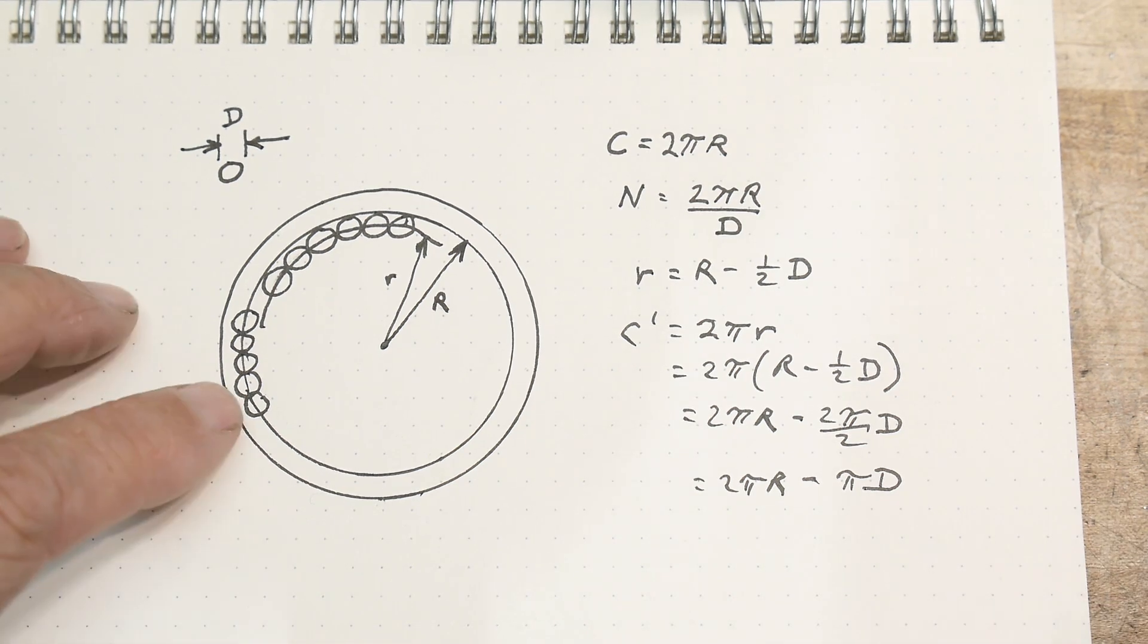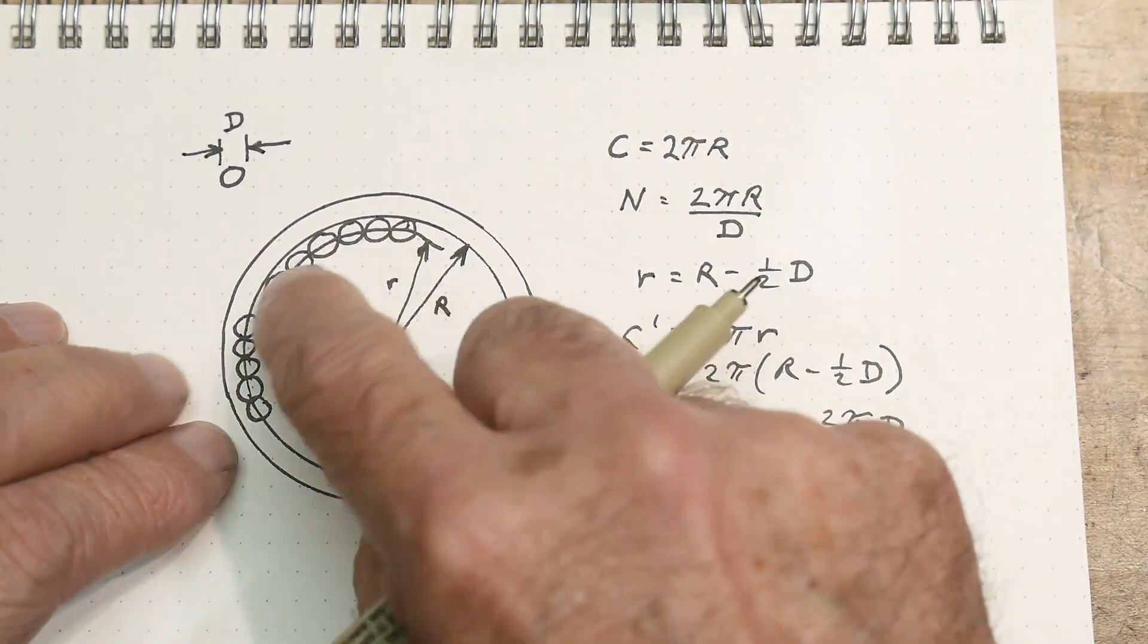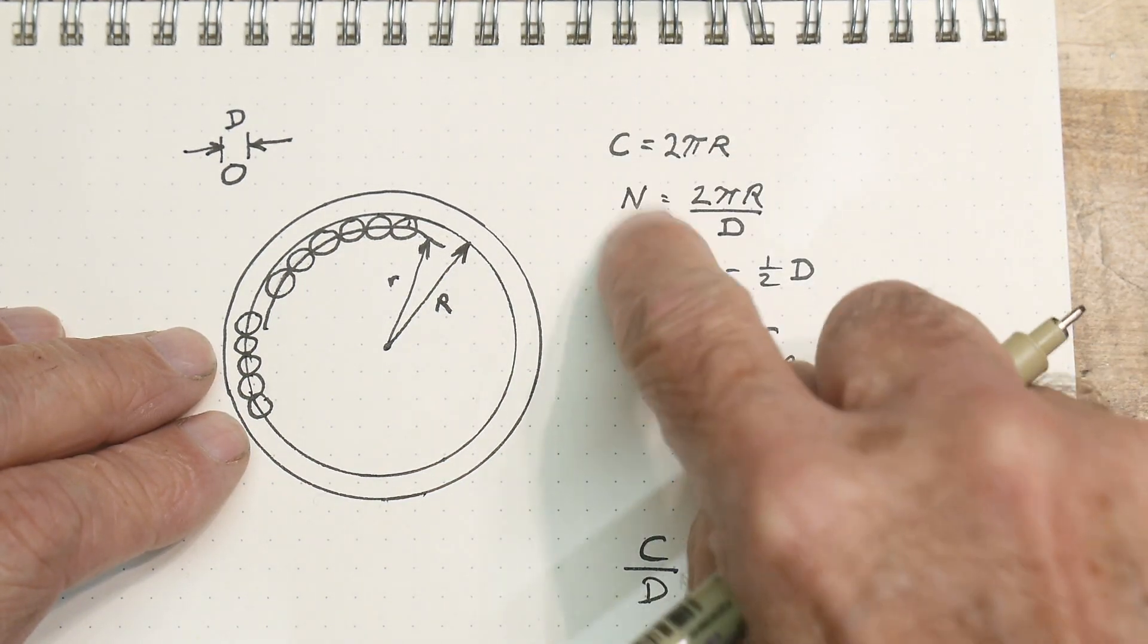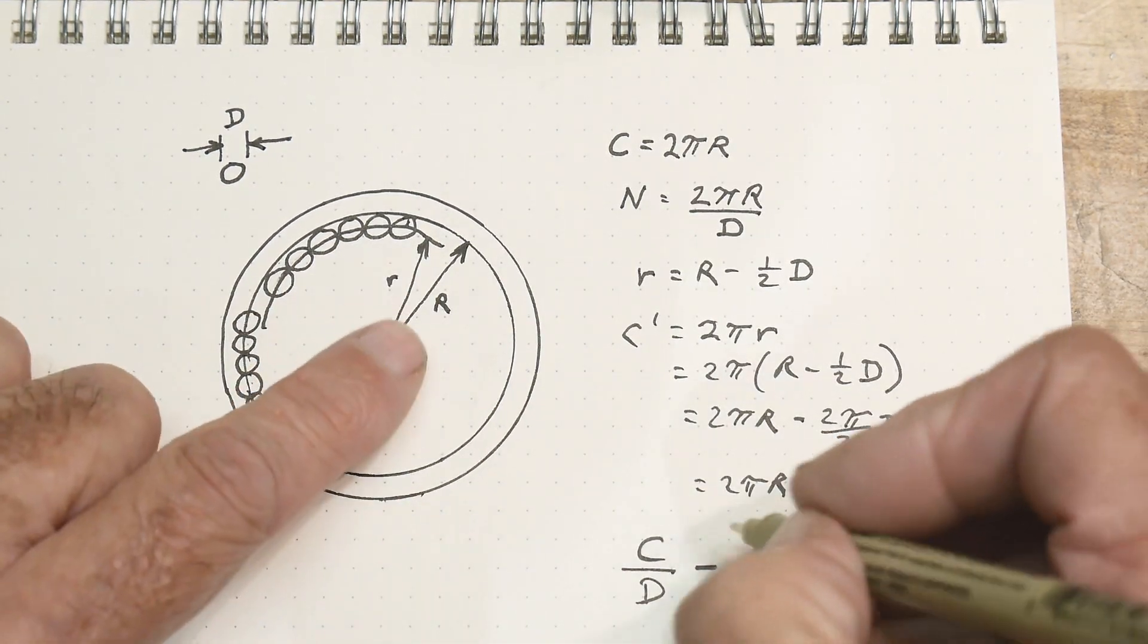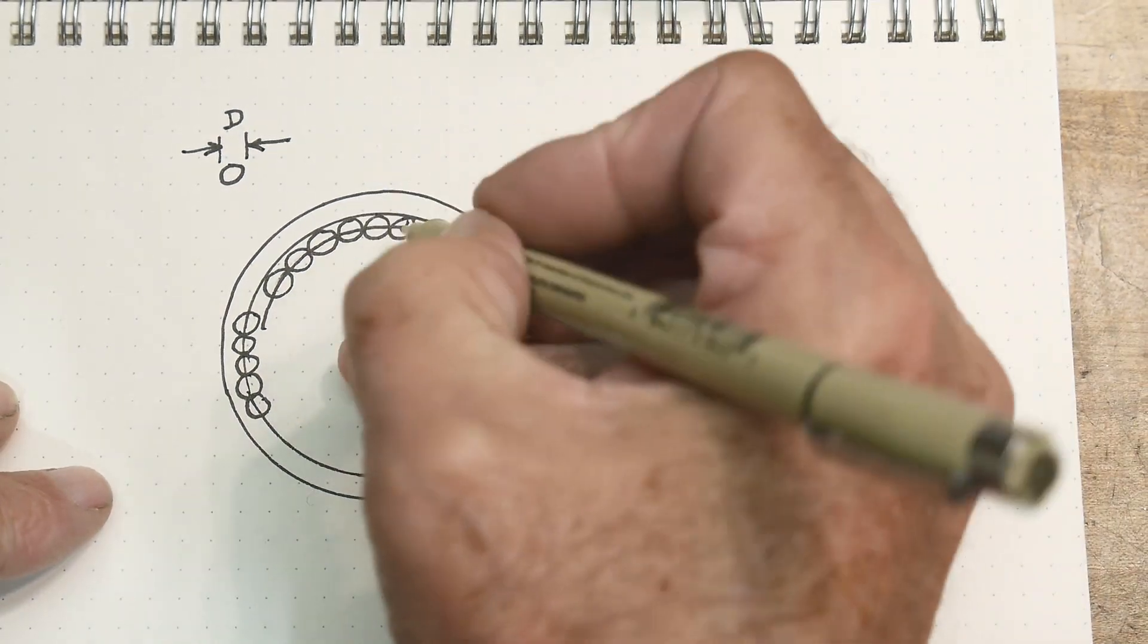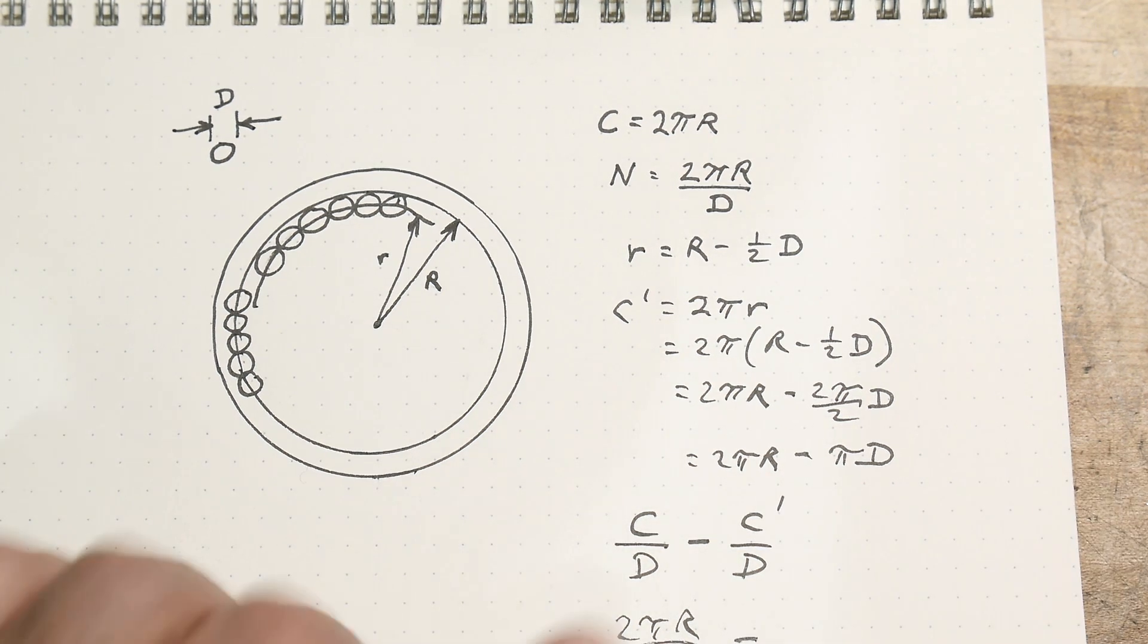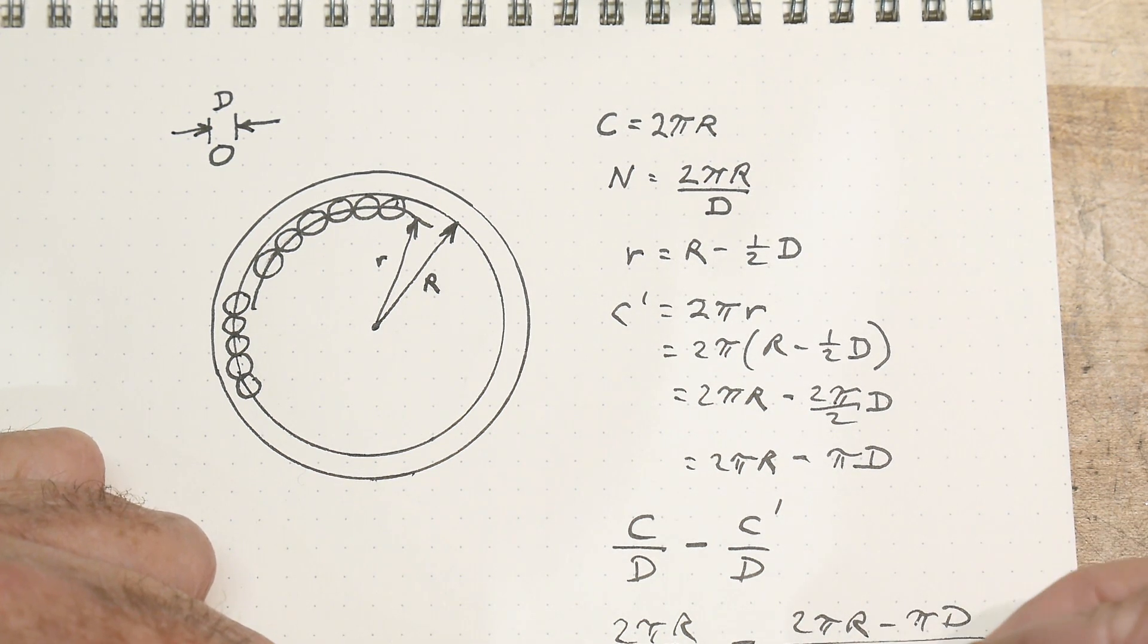Okay. So if we want to know the difference in the number of turns that go on the bigger radius, that is C. And the number, that's the circumference divided by d. That's the number of turns. Circumference divided by d is the number of turns. And then the little one, if we want to know the difference between the two, then we have C prime divided by d. Okay. This is the number of turns.